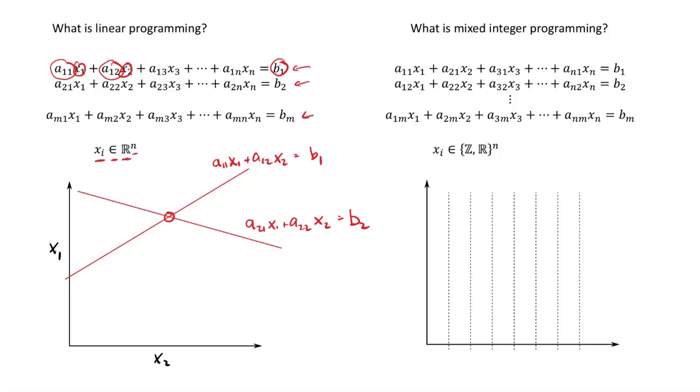So a linear program is a set of equations that can be solved for one or more solutions. Now, when we talk about an integer program, the only difference between a linear program and a mixed integer linear program is that some of the variables for the integer program are integers - they're discrete variables.